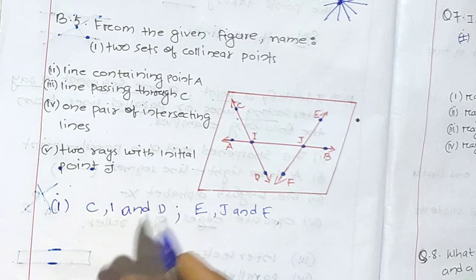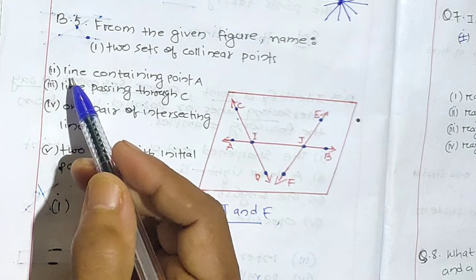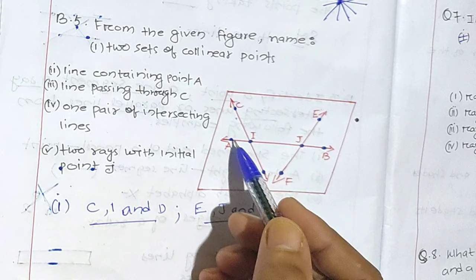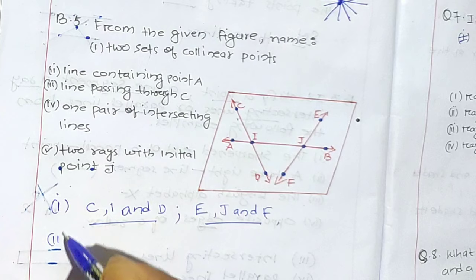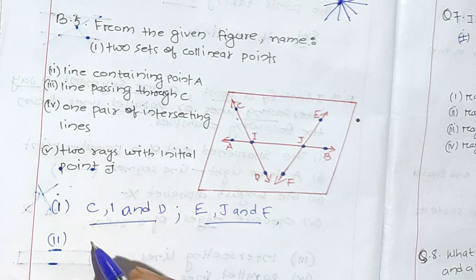Now question number 2: line containing point A. Where is point A? In this point A, we have the lines A and B. So A and B is the answer. The solution for question 2 — line containing A will be this line, so line AB. Because they are asking about the line, we write it with the line sign as explained in previous questions.